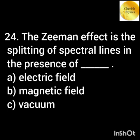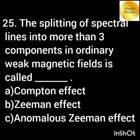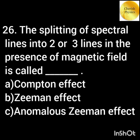The Zeeman effect is the splitting of spectral lines in the presence of a magnetic field. The splitting of spectral lines into more than three components in an ordinary weak magnetic field is called the anomalous Zeeman effect.